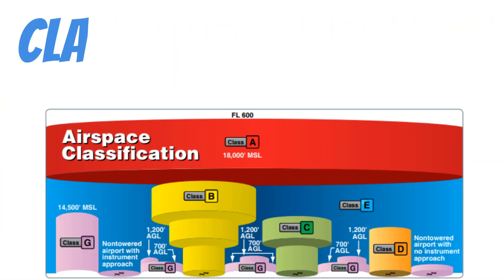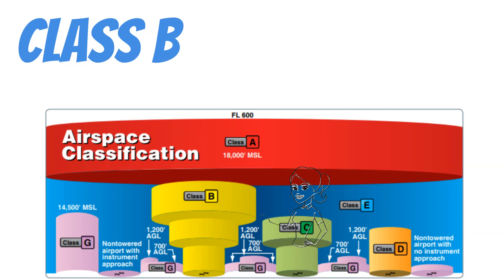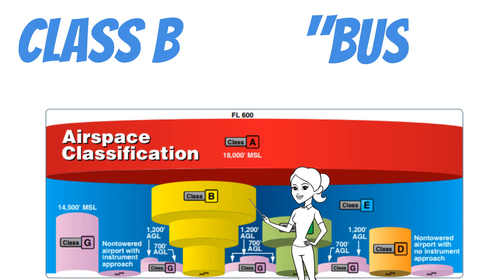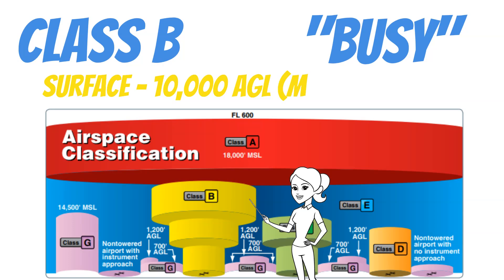Now let's take a look at Class Bravo airspace, which is depicted here as this yellow upside-down wedding cake. Class Bravo airspace is really busy airspace — you'll see this around really big airports like Dallas-Fort Worth and Chicago O'Hare. A good way to remember this is that B stands for busy. Class Bravo airspace starts at the surface and typically goes up to 10,000 feet AGL. Just remember that we need to be specifically cleared by ATC to enter.